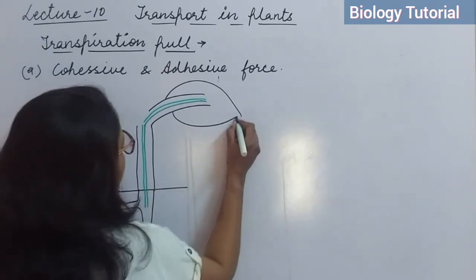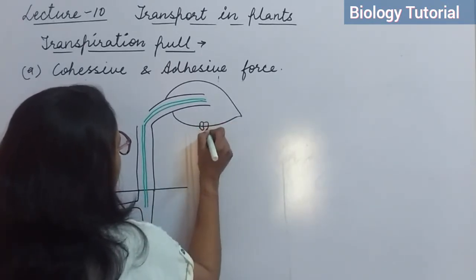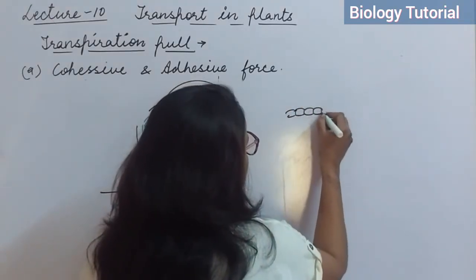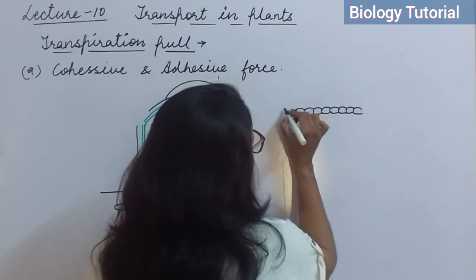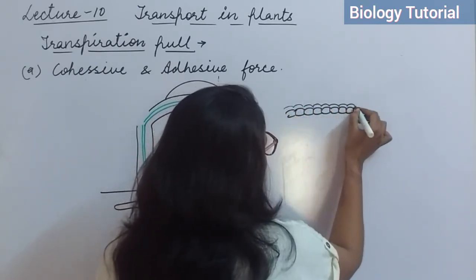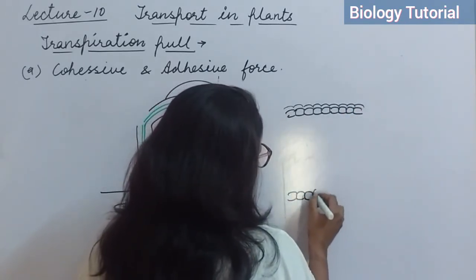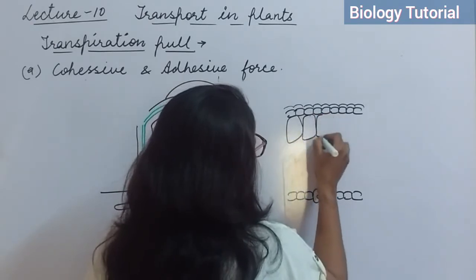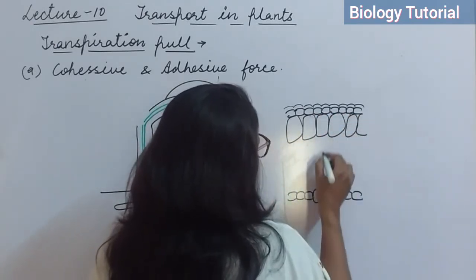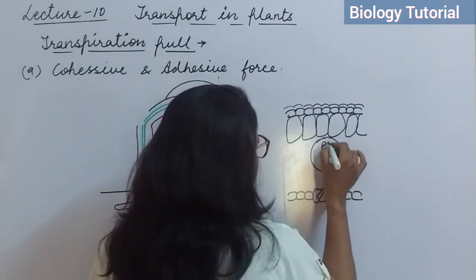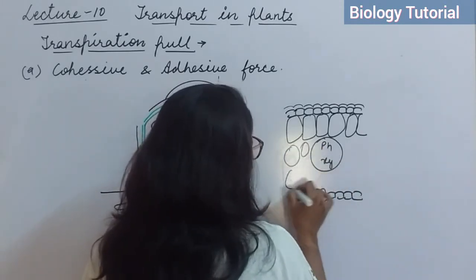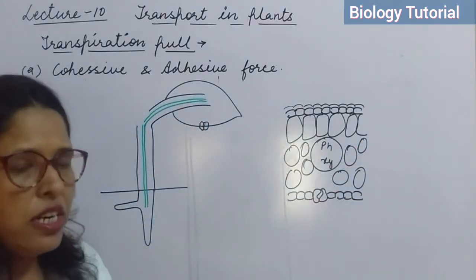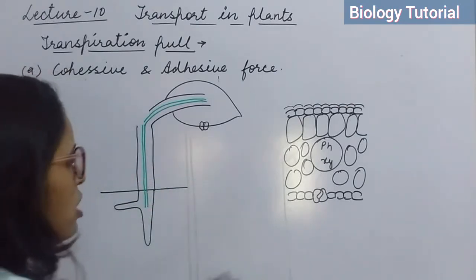In the leaf structure, stomata are present mainly on the lower epidermis. The upper epidermis has a layer of cuticle which minimizes transpiration. Below that is the lower epidermis where stomata are located. Inside the leaf are palisade parenchyma cells, vascular bundles containing phloem and xylem, and spongy parenchyma tissues. Around the stomata, air spaces are present.